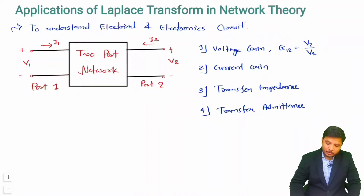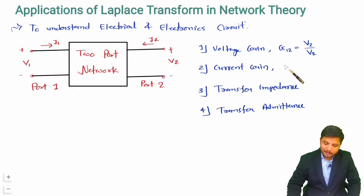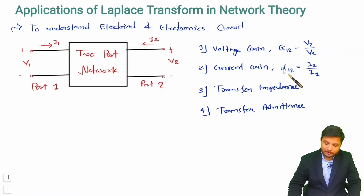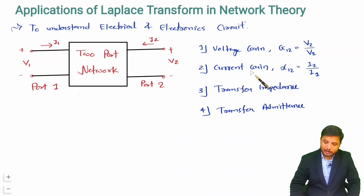Similarly, current gain is denoted as alpha. If I write alpha1,2, then current gain is a ratio of currents where 1,2 means 2 divided by 1. So it is output current divided by input current — that is current gain.